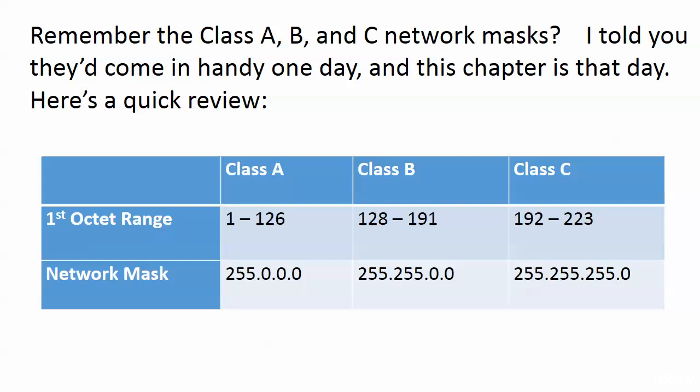Class B, that first octet range is 128 through 191, the network mask is /16. Class C, that first octet range 192 through 223, and the network mask being a /24 or of course 255.255.255.0. See, it is a lot easier to say slash 24.